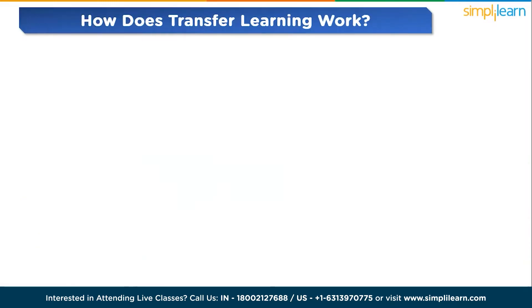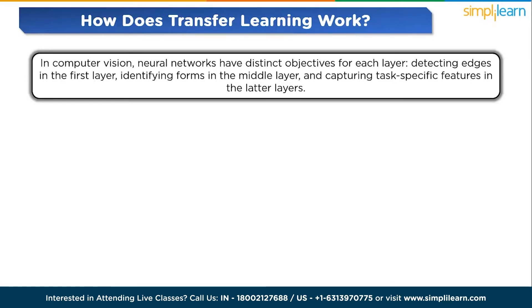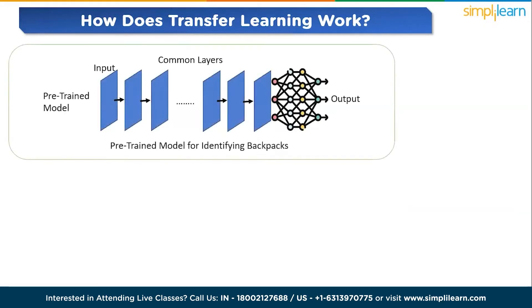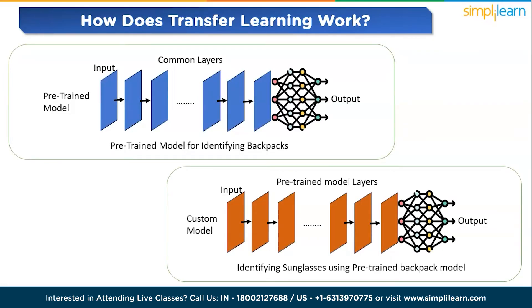So how does transfer learning work? In computer vision, neural networks have distinct objectives for each layer — detecting edges in the first layer, identifying forms in the middle layer, and capturing task-specific features in the later layers. Transfer learning utilizes the early and center layers of a pre-trained model and only retrains the later layers, leveraging the labeled data from its original task. For instance, if we have a model trained to identify backpacks and now want to detect sunglasses, we retrain the later layers to understand the distinguishing features of sunglasses from other objects.